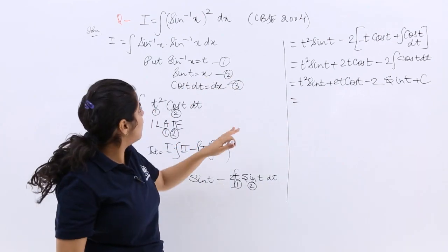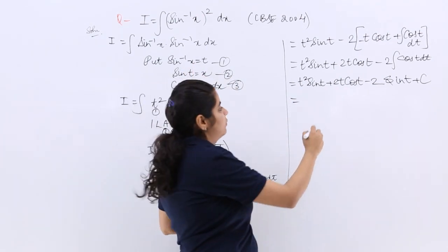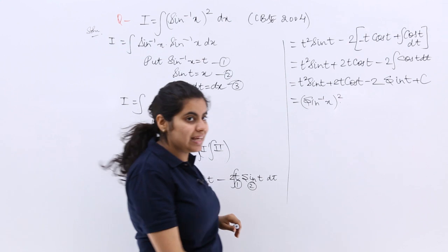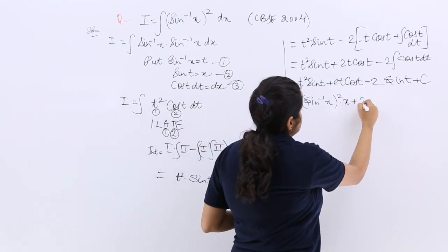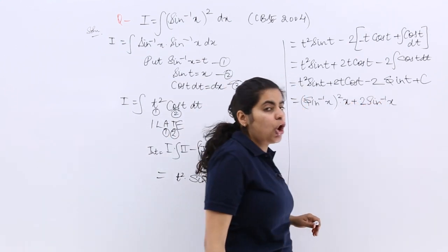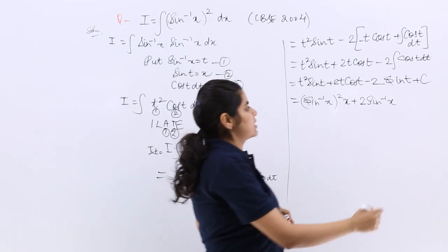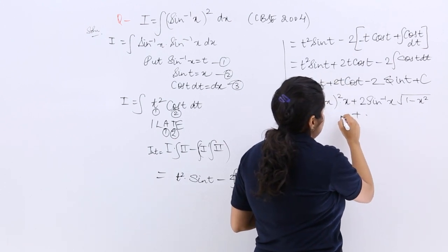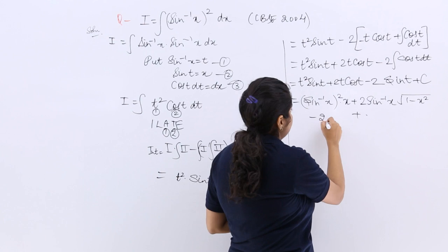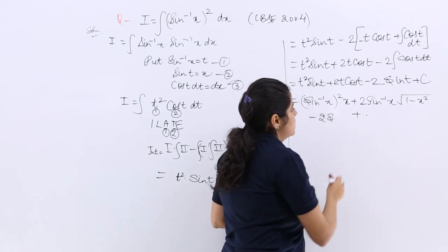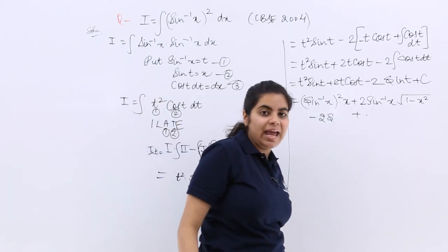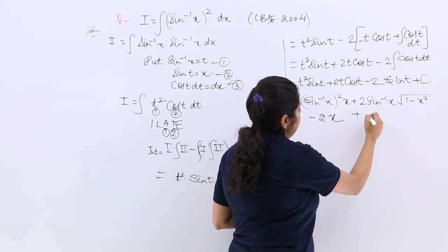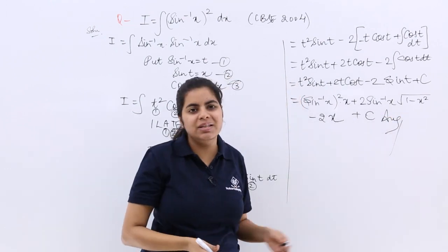Now I cannot leave my answer in terms of t. So I have to use x. So it is sin inverse x whole square—sin t was nothing but x—plus 2 sin inverse x. Cos t would be under root 1 minus x squared. Then minus 2 sin t. Sin t is what? As you can see, sin t is x.